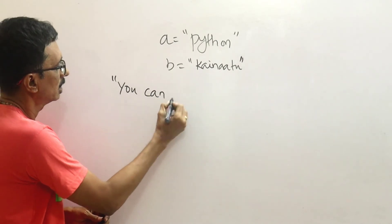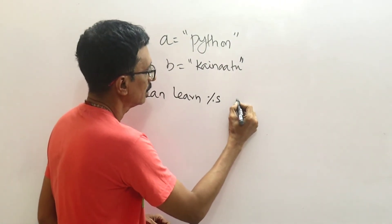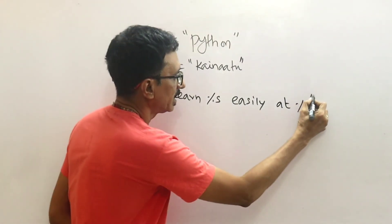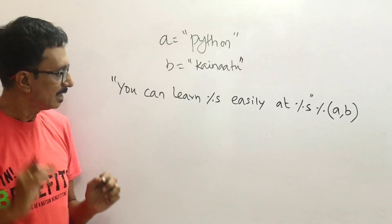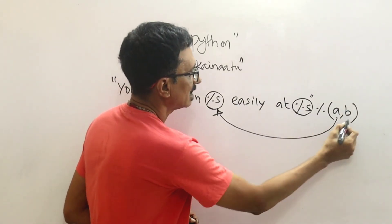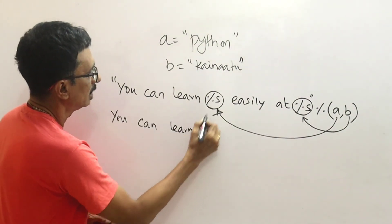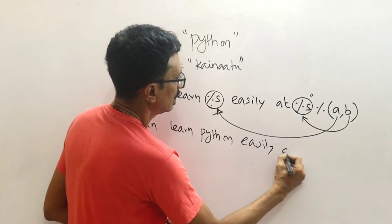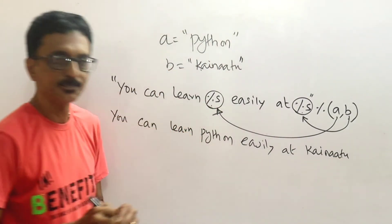You can learn how to format using '%s'. The syntax is: '%s %s' % (a, b) — this formats the string with variables a and b. For example, 'You can learn Python' — that's all for string formatting.